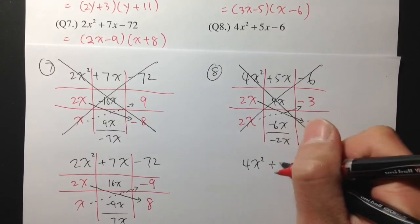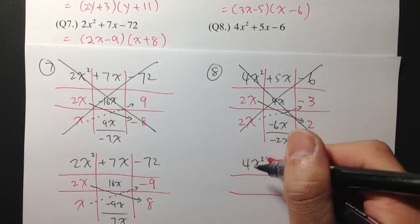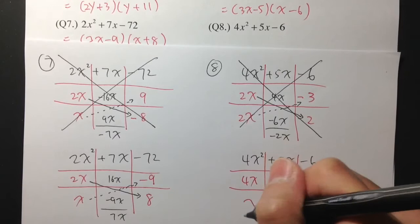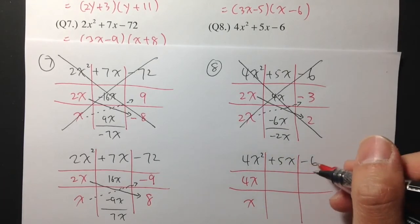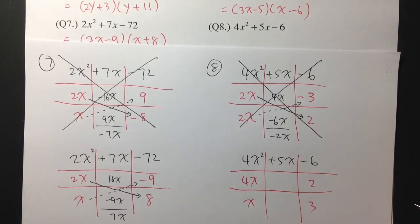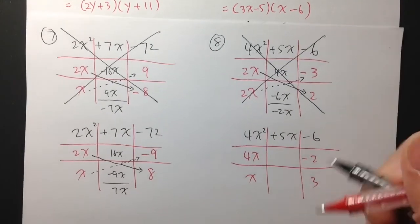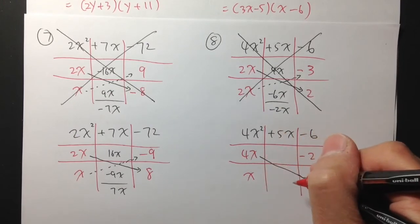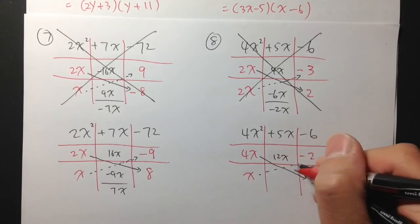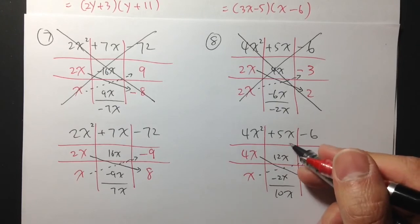Let's pick another combination. For 4x squared, we can also do 4x times x. For negative 6, I'll put 2 here and 3 here, making the 2 negative — so negative 2 times 3 gives negative 6. Cross-multiplying 4x times 3 gives 12x, and x times negative 2 gives negative 2x. Combined that's positive 10x, which is not what we're trying to get.